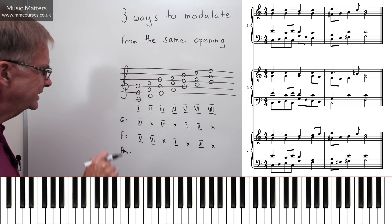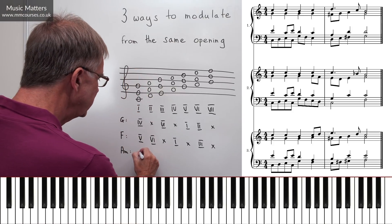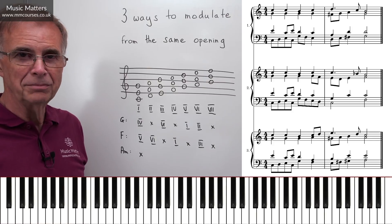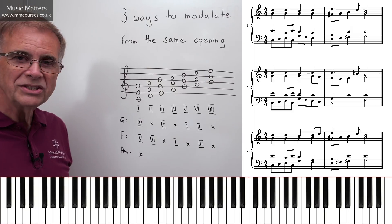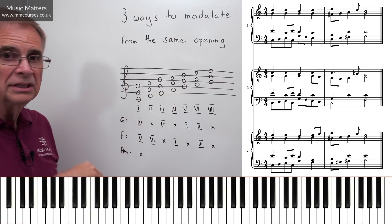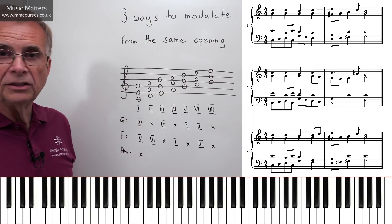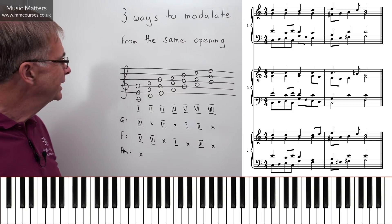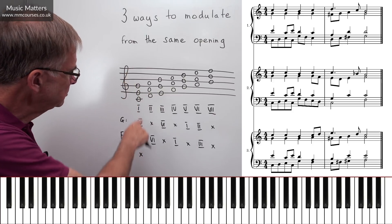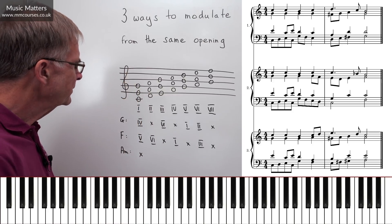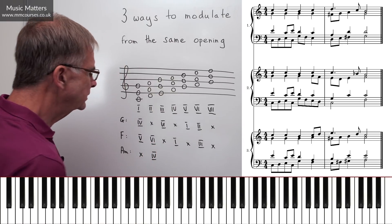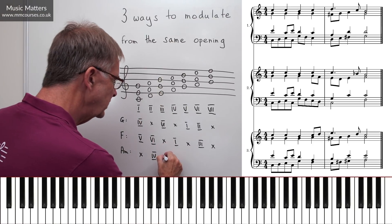Working on that basis, chord I in C major is not really a useful pivot chord into A minor, because in harmonic minor the seventh degree — G — needs to be G sharp. Chord II in C major is chord IV in A minor, so that's a good candidate.